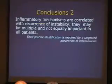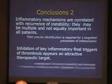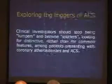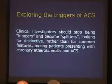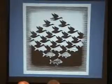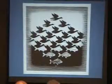The precise identification of these mechanisms is required for targeted prevention of inflammation — otherwise we certainly cannot give steroids. Inhibition of key inflammatory final triggers of thrombosis appears as an attractive therapeutic target, and patients with recurrent instability and elevated inflammatory markers are ideal candidates for pilot studies. If you want to explore the triggers of acute coronary syndrome, clinical investigators should stop being lumpers and become splitters — looking for distinctive rather than common features among patients presenting with coronary sclerosis and acute coronary syndrome. To give you an idea: if you look at an ambiguous image at its extremes, you see clearly a bird at one end and a fish at the other — the middle is a mess. If you don't start looking at the extremes, you will never understand the composition of the picture. And I think that what causes acute coronary syndrome may be even more complex than this.